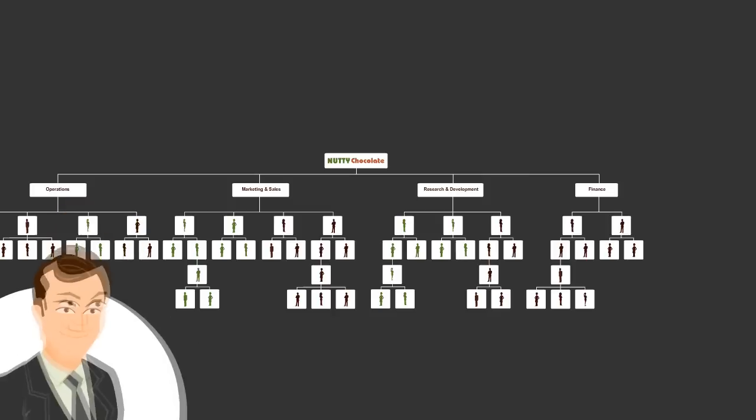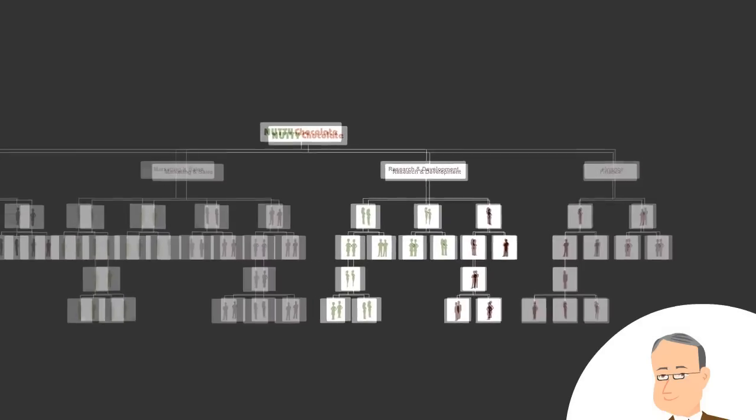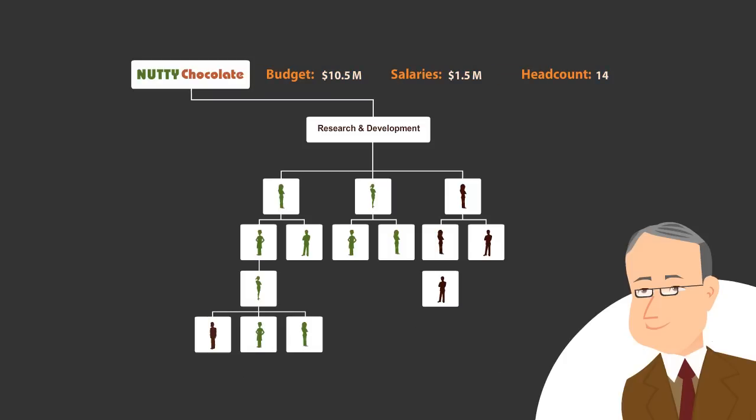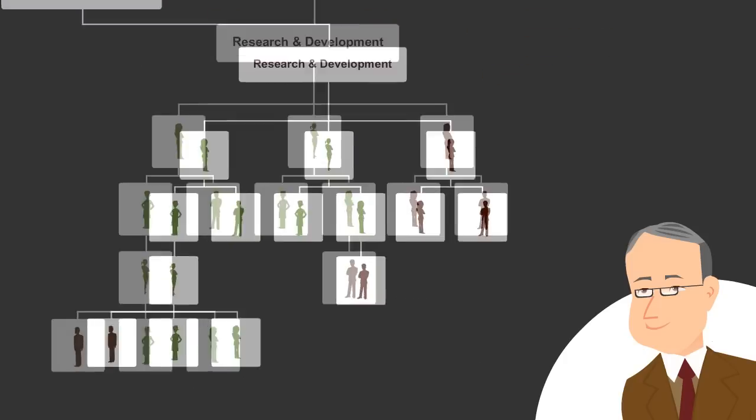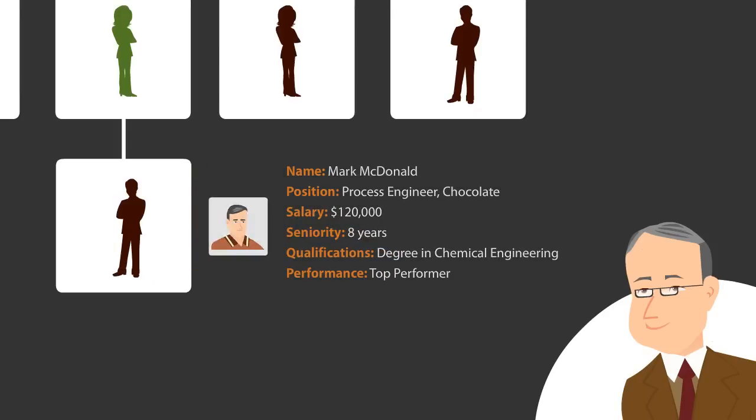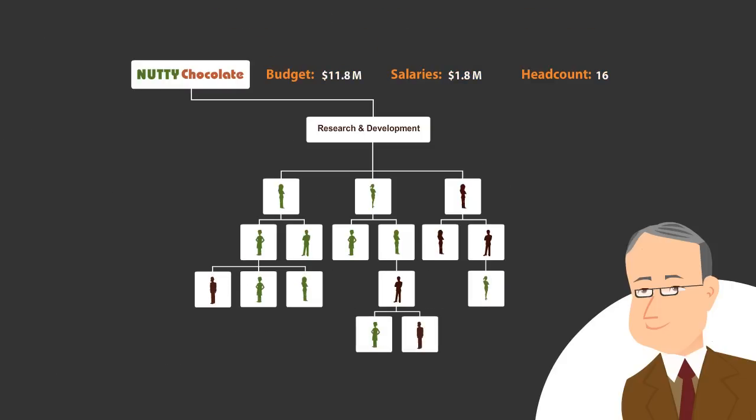David delegates different branches of the global org chart to the relevant managers. Through secure online access to their areas of responsibility, managers can create their own scenarios. With visibility into detailed employee profiles and critical metrics, they can easily drag and drop individuals and immediately see the impact of their decisions on budgets, salaries and headcounts.